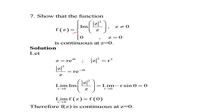Now r·e^(−iθ) = r(cos θ − i sin θ), so its real part is r cos θ and its imaginary part is −r sin θ. Therefore, the limit as z → 0 of Im(|z|²/z) equals the limit as r → 0 of (−r sin θ) = 0. Thus, limit as z → 0 of f(z) = 0 = f(0), since from the definition f(0) = 0. Therefore, the function f(z) is continuous at z = 0.